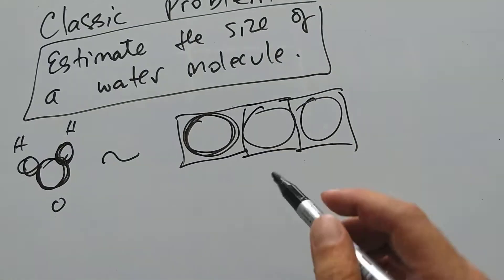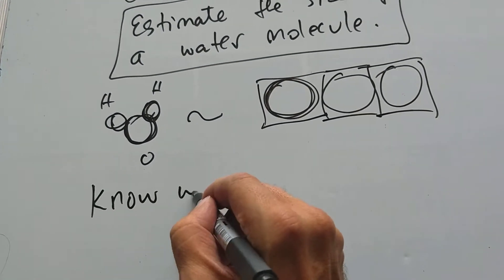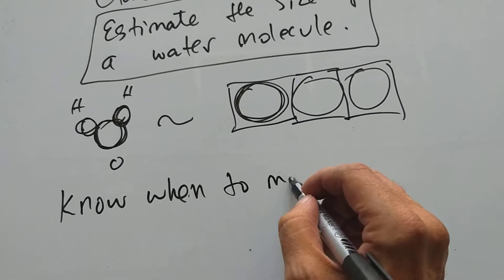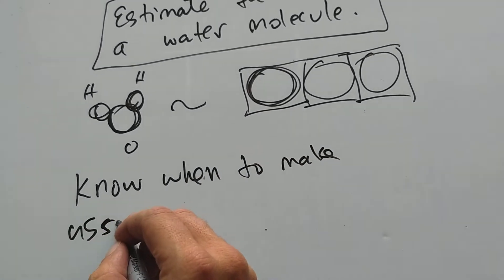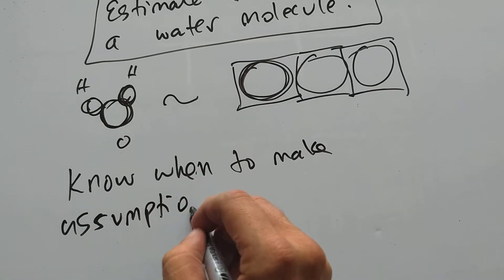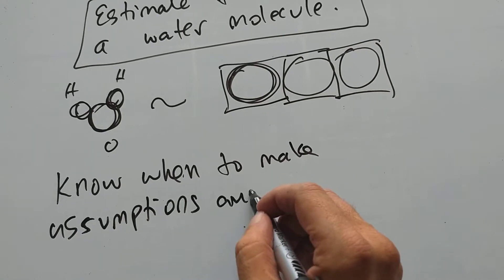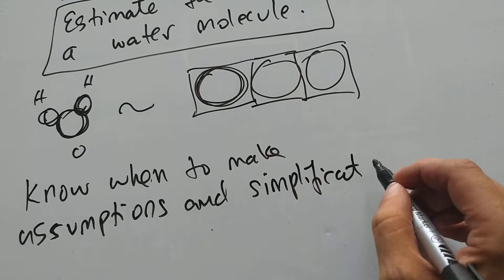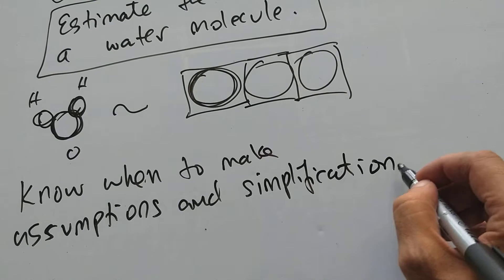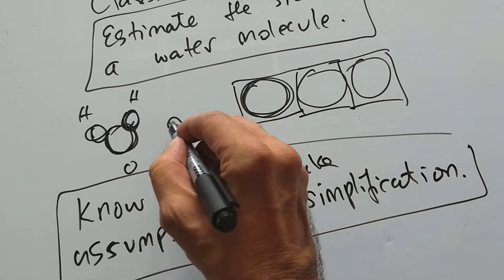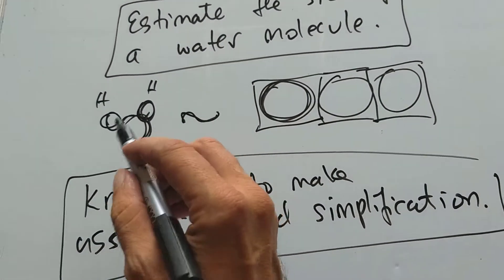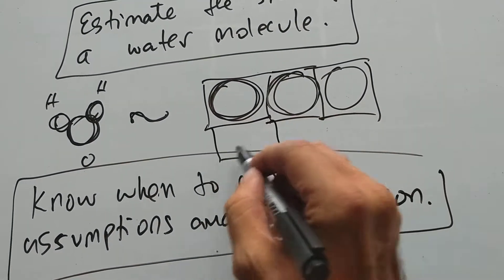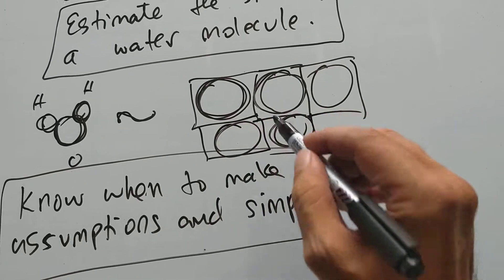In physics problems you have to know when to hold them, know when to make assumptions and simplifications. It's like playing poker. You have to know when to do this. So we're going to make this simplification from complicated thing to simple spheres packed in boxes.